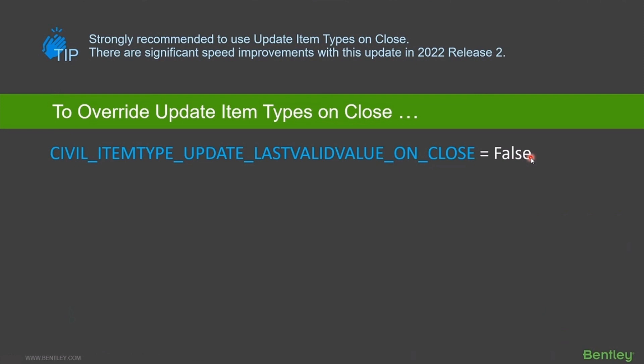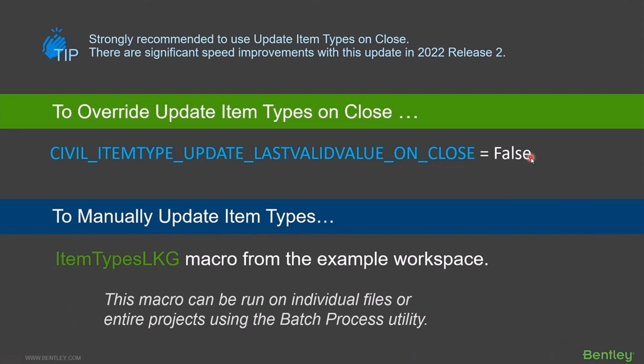If you do choose to disable it and need to refresh those item types — because you're going to share the file with a MicroStation user or take it to an iTwin — we also deliver a VB macro called 'item types lkg', delivered as part of our example workspace. This macro will go through and do the updates on the files, so you do have another option. But I'd encourage you to use the built-in functionality and let it happen every time you close the files.